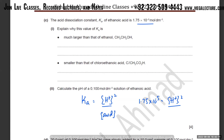So [H⁺]² = 1.75 × 10⁻⁵ × 0.1 = 1.75 × 10⁻⁶. Take the square root: [H⁺] = √(1.75 × 10⁻⁶) ≈ 1.32 × 10⁻³ mol dm⁻³.